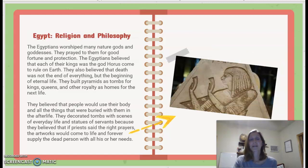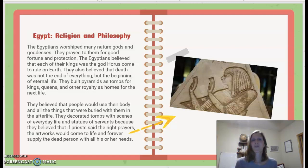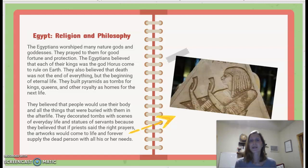Egypt Religion and Philosophy: The Egyptians worshipped many nature gods and goddesses. They prayed to them for good fortune and protection. They believed that each of their kings was the god Horus come to rule on earth. They also believed that death was not the end, but the beginning of eternal life. They built pyramids as tombs for kings, queens, and other royalty as homes for the next life. They decorated tombs with scenes of everyday life and statues of servants, believing that if priests said the right prayers, the artworks would come to life and forever supply the dead person with all their needs.